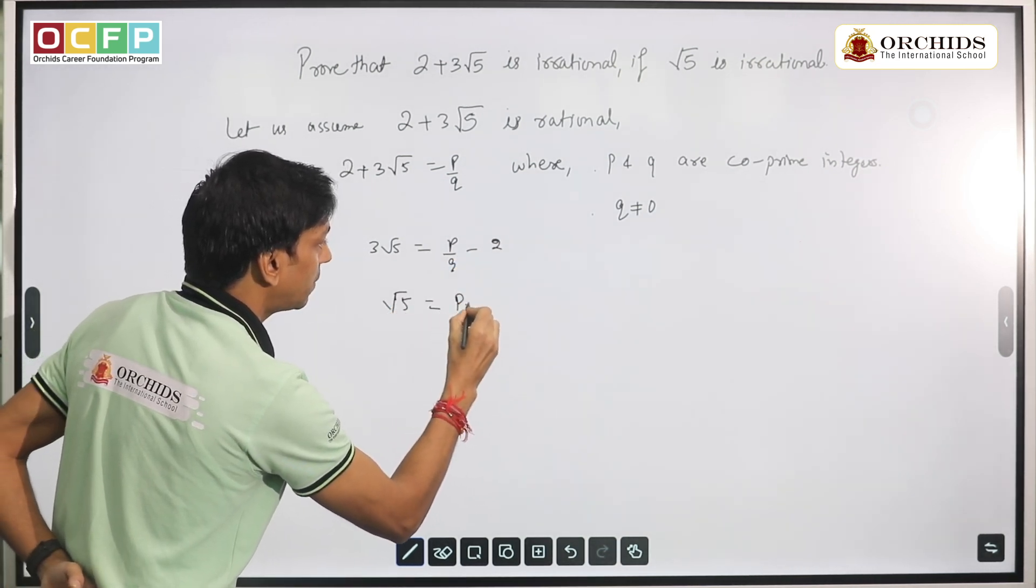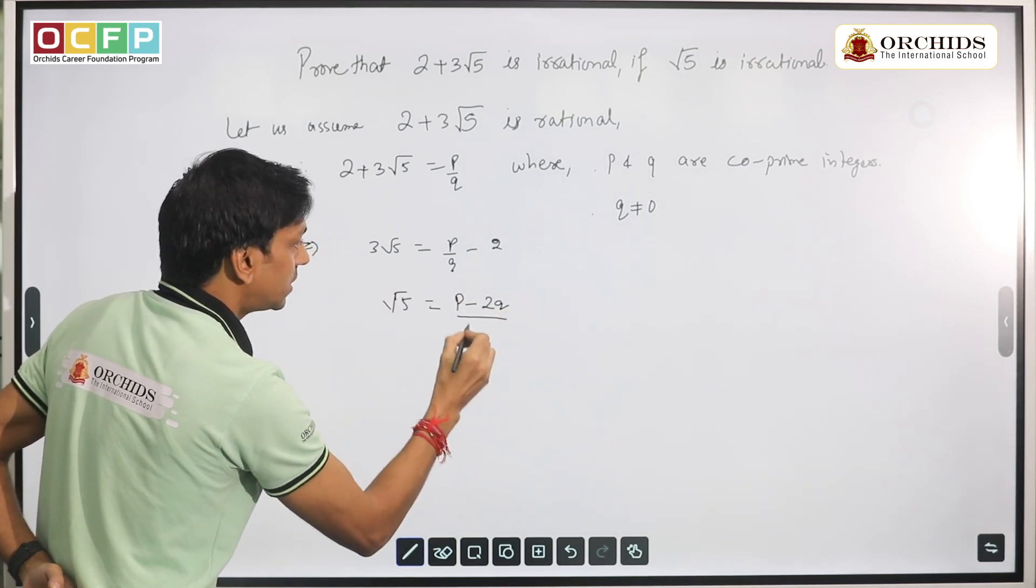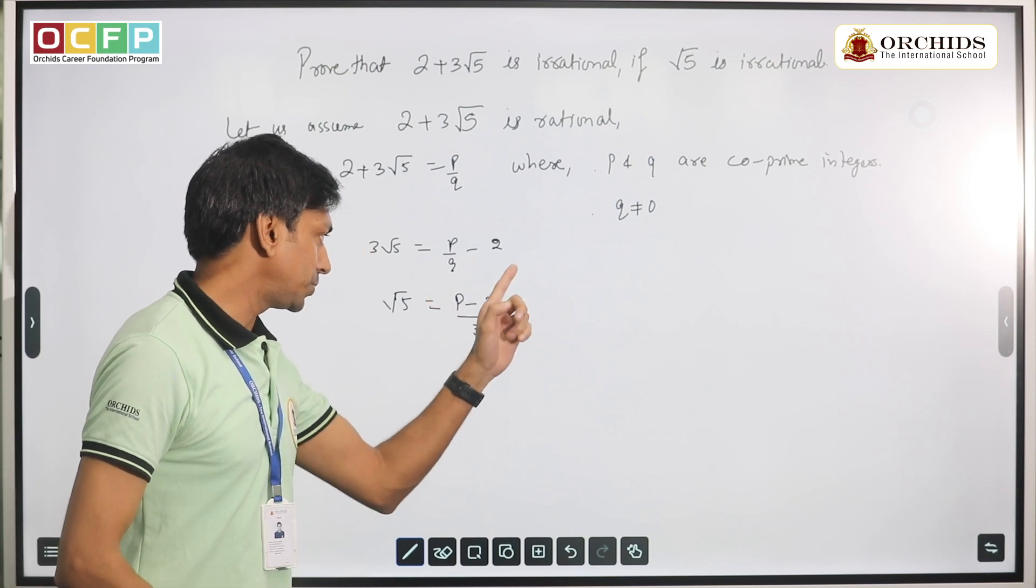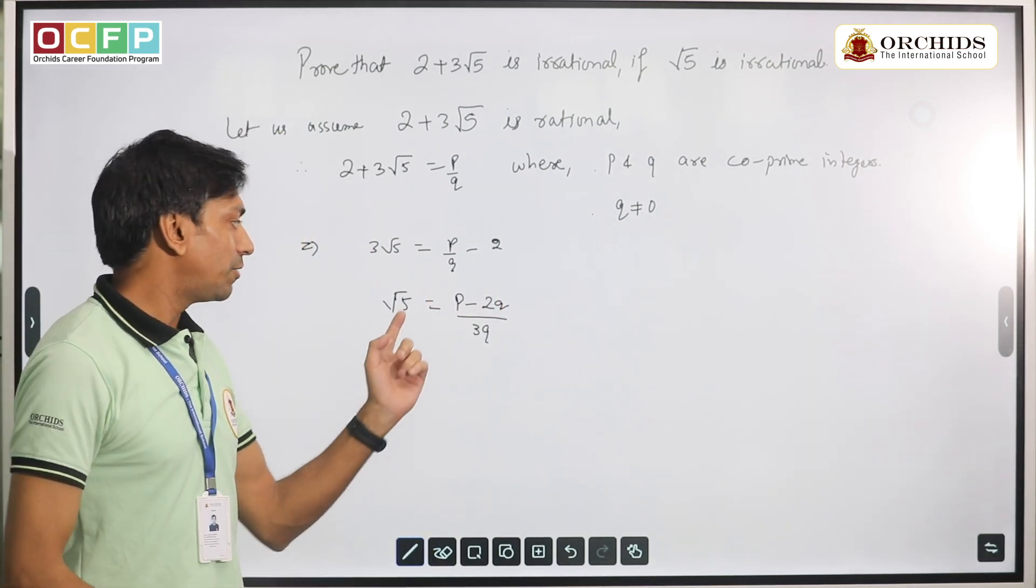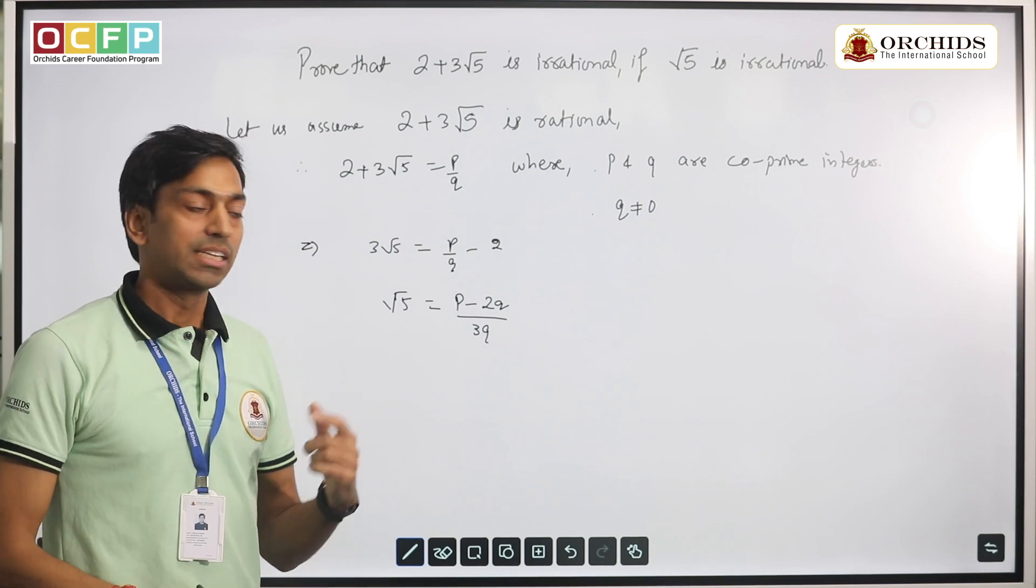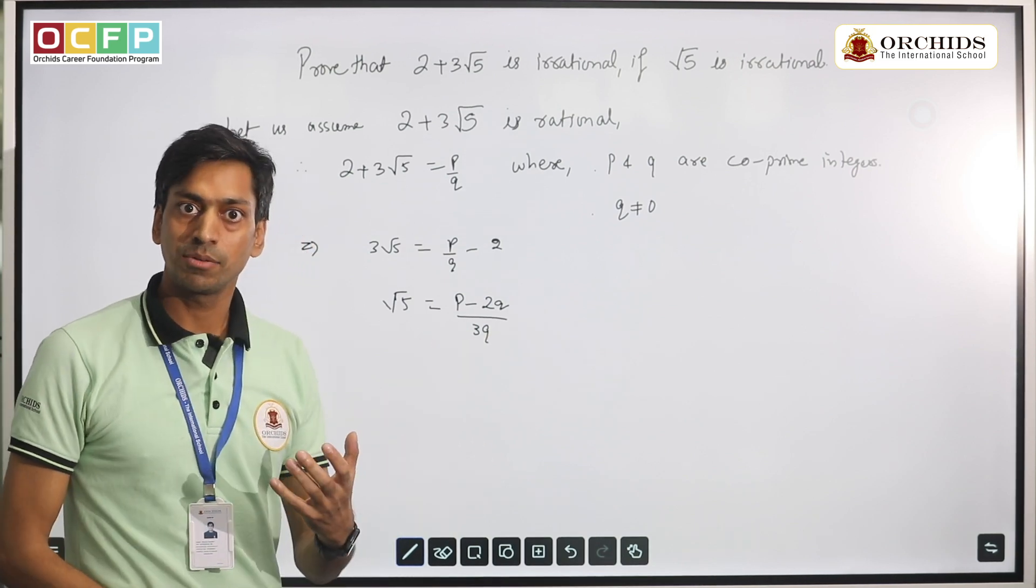Now if you see on the right-hand side, we have only integers p and q in the numerator and in the denominator also q. Whenever we do any kind of operation—addition, subtraction, division—on integers, that leads to the formation of a rational number.